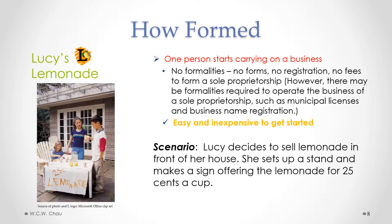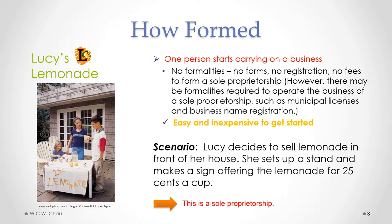A scenario that we will be working with throughout this module is called Lucy's Lemonade, which involves a little girl named Lucy who starts up a lemonade business. We'll see her lemonade business evolve from being a sole proprietorship all the way to being a public corporation. The basic scenario starts with Lucy deciding to sell lemonade in front of her house — she sets up a little stand and makes a sign offering lemonade for 25 cents a cup. In doing so, she has created a sole proprietorship.